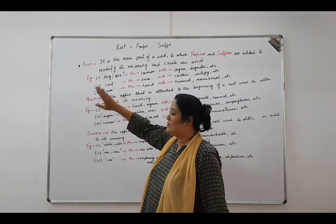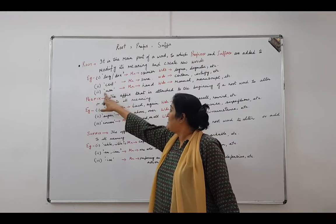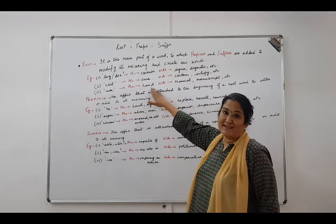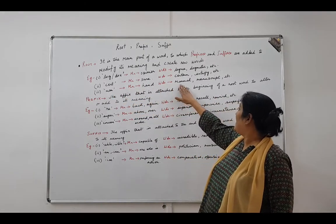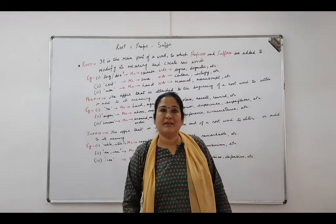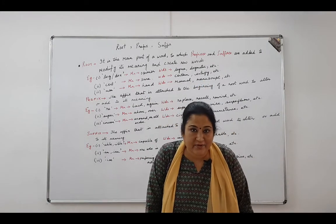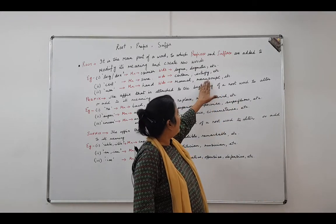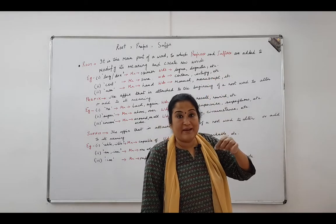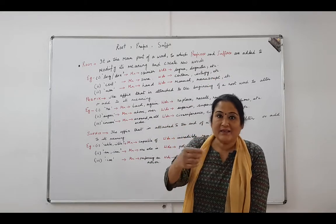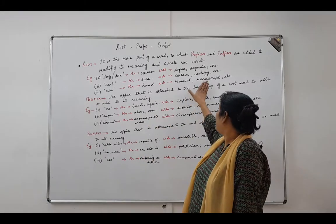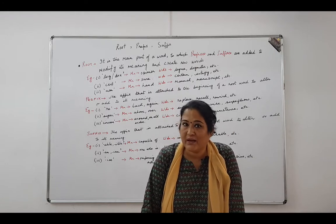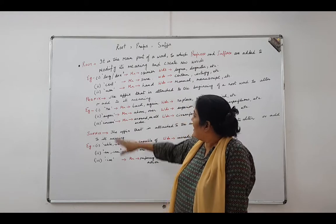Let's come to the third root word: 'man'. Now this 'man' is not the masculine gender — the root word 'man' means hand. Look at the words we have picked up: 'manual' and 'manuscript'. Manual labour is any labour done with your hands — for instance, swimming and stitching. And in 'manuscript', 'man' means hand and 'script' means written form, so any handwritten script is a manuscript. For example: 'The novelist finished his first manuscript within a week.'